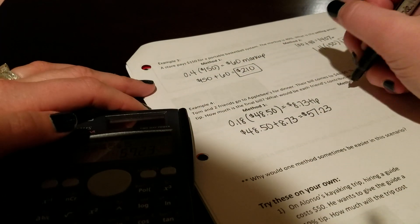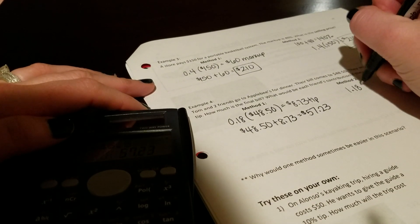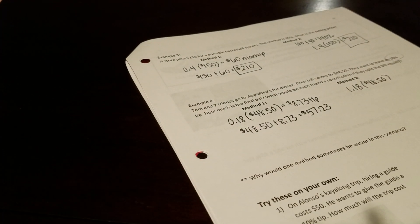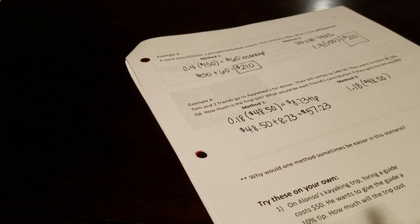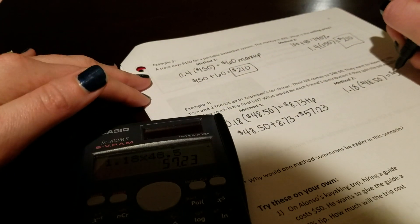If I want to do method two, I'm going to add 100 plus 18, so 118% or 1.18 times $48.50. And again, just to prove the point, you also get $57.23.